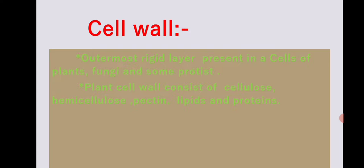The cell wall contains cellulose, hemicellulose, pectin, lipids, and proteins. The cell wall of plants may also contain silica, cutin, suberin, wax, and lignin. Lignin, suberin, pectin, and other chemicals are present in plant cell walls.